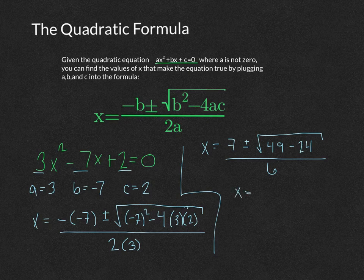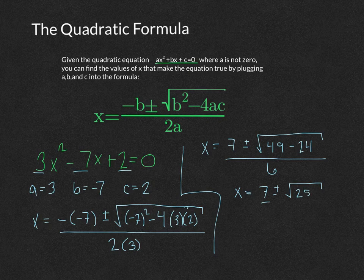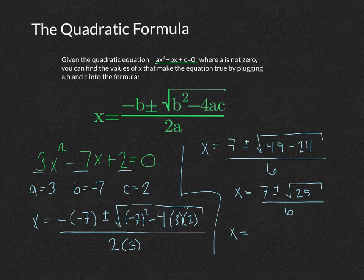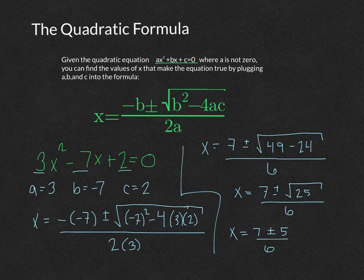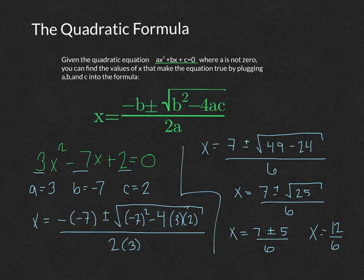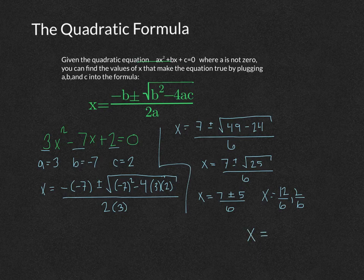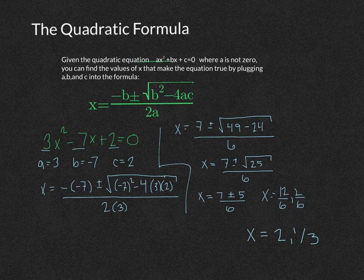So we keep simplifying. The hardest part of the quadratic formula is the simplification. 49 minus 24 is 25, all over 6, so x equals 7 plus or minus 5 over 6, which we can simplify as 7 plus 5 over 6, and 7 minus 5, which is 2 over 6. Then what we get is x equals 2 and 1 third, and that is our final answer.